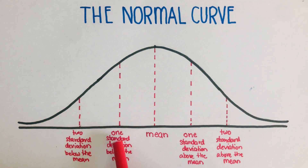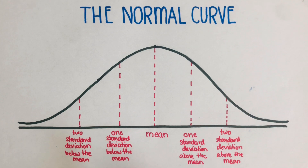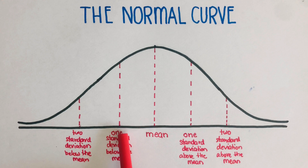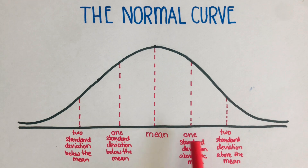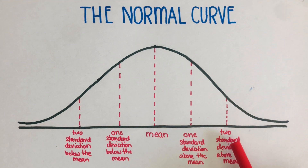From the mean, going left, this line represents one standard deviation below the mean. Standard deviation is a number that tells us how spread apart the values are. Going further left, we have two standard deviations below the mean, and three standard deviations below the mean. On the right side, we have one standard deviation above the mean and two standard deviations above the mean.